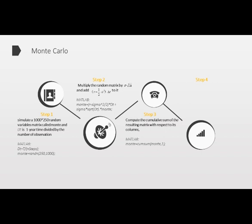The third step is to compute the cumulative sum of the resulting matrix with respect to its columns to simulate the stochastic process of price change, and we get the final result of this stochastic simulation. At last, we add together with the logarithmic initial price of stocks, and then apply the exponential function to every element of the matrix to get the final stock price. By using this final stock price running in MATLAB, we can now calculate the payoff of each stock, so as to obtain the prices of derivatives.